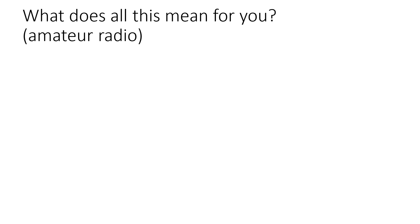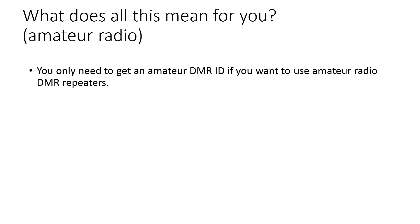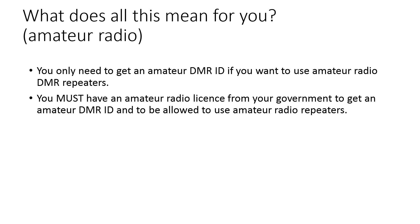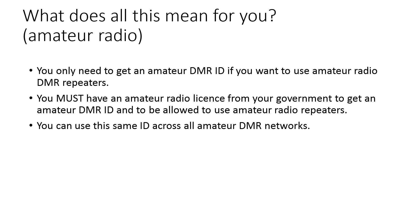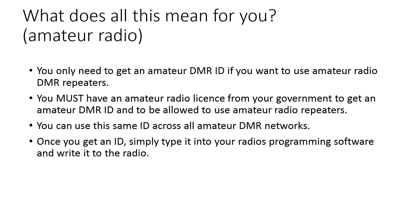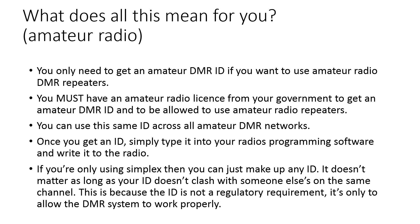For amateur radio users: you only need to get an amateur DMR ID if you want to use amateur radio DMR repeaters. You must have an amateur radio license from your government to get an amateur DMR ID and to use amateur radio repeaters. You can use the same ID across all amateur DMR networks. Once you get an ID, simply type it into your radio's programming software, write it to the radio, and you can start using it. If you're only using simplex, you can make up any ID as long as it doesn't clash with someone else's on the same channel, since the ID is not a regulatory requirement — it's only to allow the DMR system to work properly.